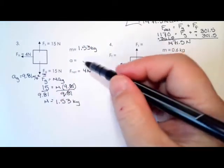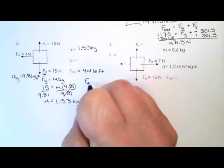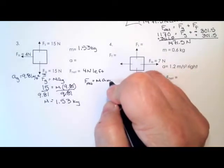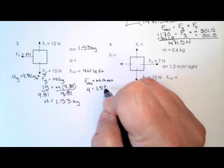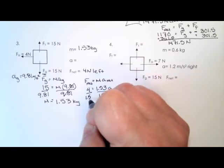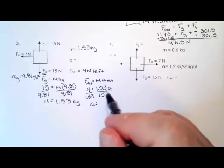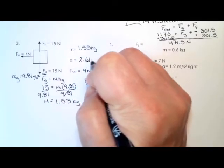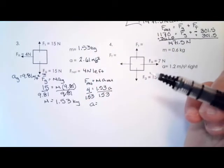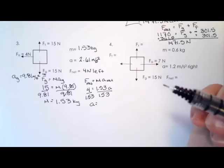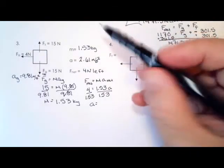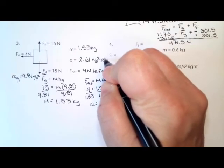So now you can put that into F_net equals the mass times the acceleration, which is what we're looking for, the net acceleration. So we got 4 equals 1.53 times the acceleration, divide both sides by 1.53, and the acceleration ends up being 2.61 meters per second squared. And then let's think about the direction. Acceleration is a vector quantity, so we got to be able to say which direction. Newton's second law says it has to be in the same direction as the net force, which happens to be left.